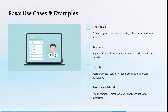Looking at Rasa's use cases: in healthcare, you can do patient triage and symptom checking, which can improve healthcare access and speed up workflows. In telecoms, it supports chatbots that handle technical troubleshooting and billing inquiries. In banking, assistants can check balances, report lost cards, and ensure compliance. It also has strong enterprise adoption — it's used by Orange, Lemonade, and Helvetia Insurance for automation processes.